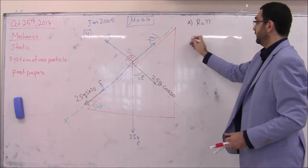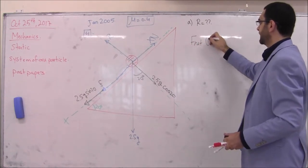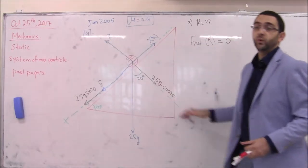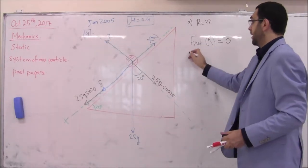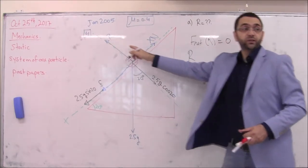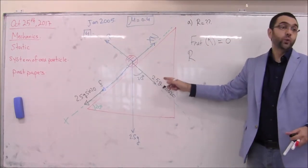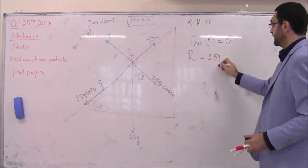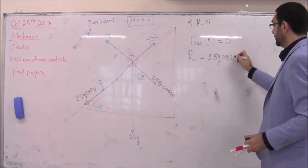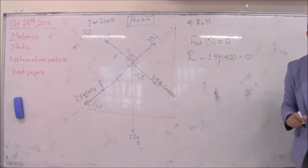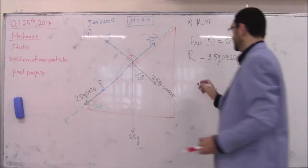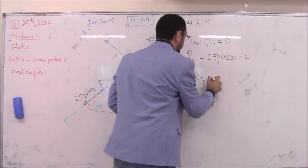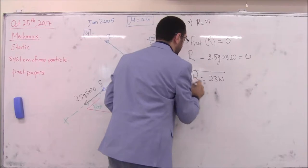Along the y-axis: R minus 2.5g cosine 20 equals zero. Therefore R equals 23 Newtons. This is part A.